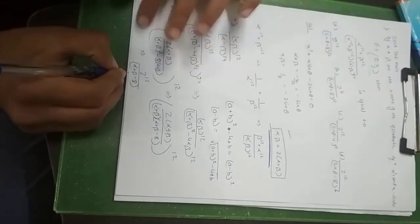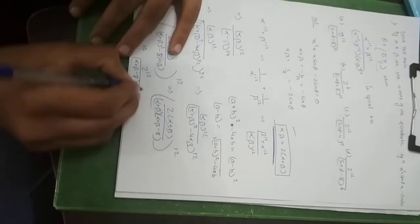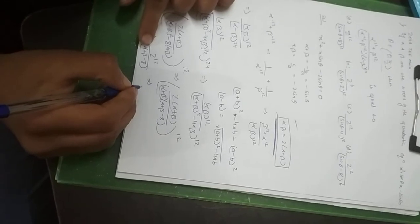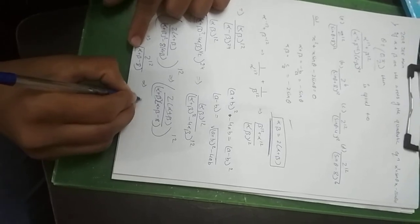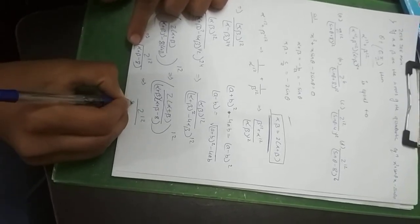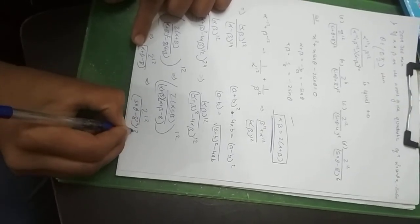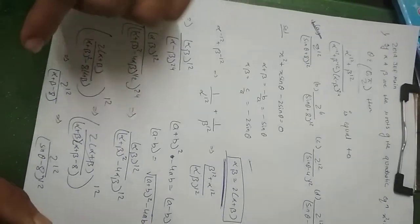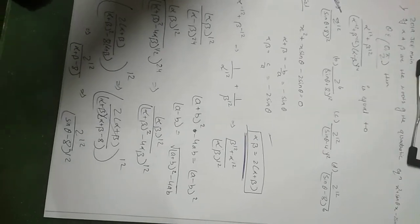We can check against the options — this answer is matching option A. Simply putting in the value of alpha plus beta, the final answer comes out to be 2¹² · (sinθ − 8)¹². So the answer is Option A. Thank you, and keep watching — every day I will upload a question. Thank you very much, bye.